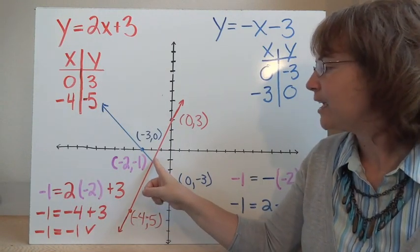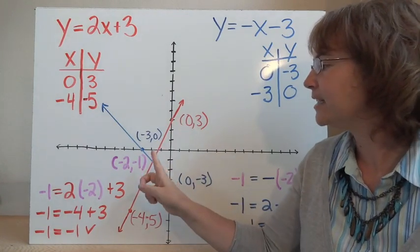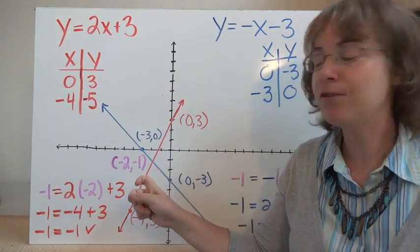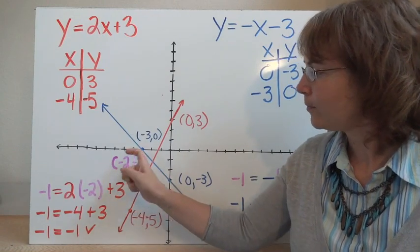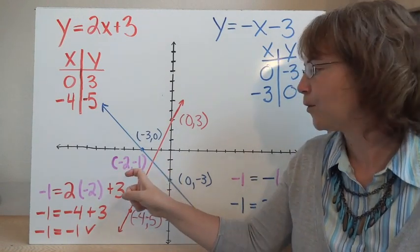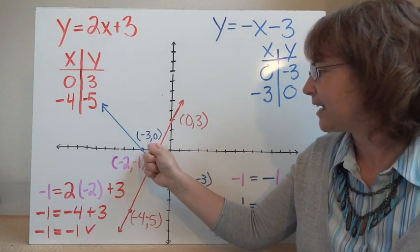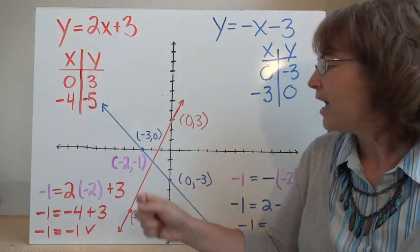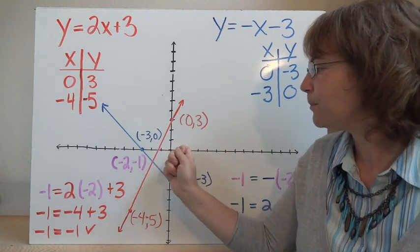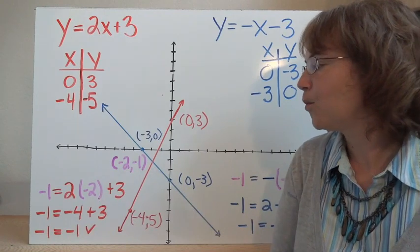That point of intersection is on both lines — this coordinate point will make both equations true. Looking at my graph, I go over to negative 2 on the x-axis and down to negative 1 on the y-axis, and I find that's the place where they intersect. Just by looking at where the lines intersect, I can find my coordinate point. This is why it's a little bit tricky — if you have a fractional point, it's difficult to tell when you're graphing.